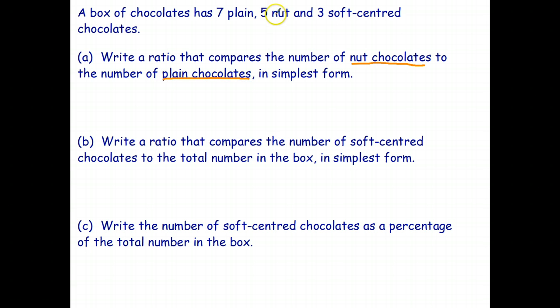Well, there are five nut chocolates and seven plain chocolates, so we can write that as five is to seven. There's no common factors in five and seven other than one, so that was easy. The answer is five is to seven.